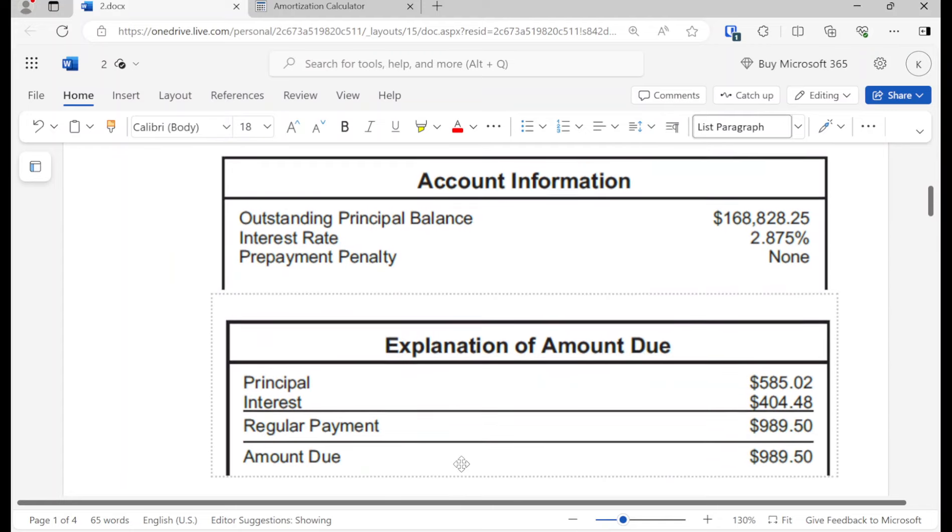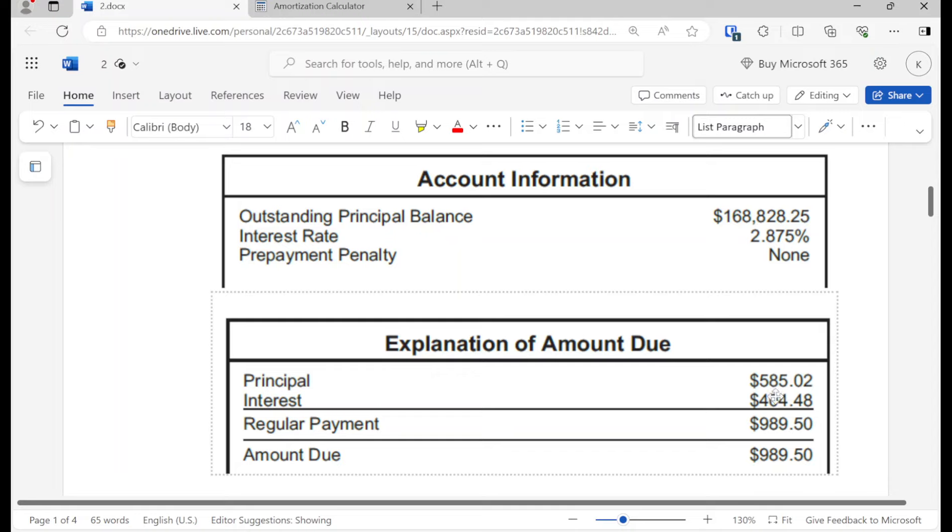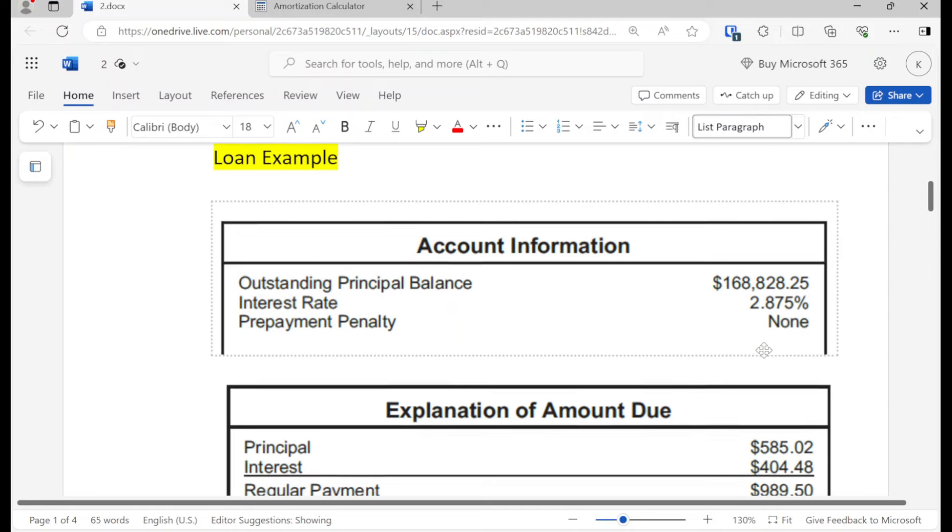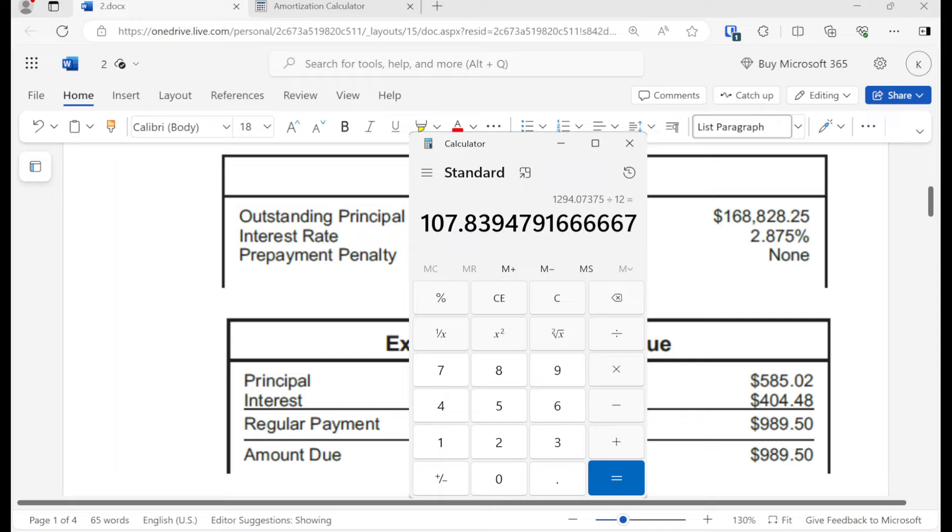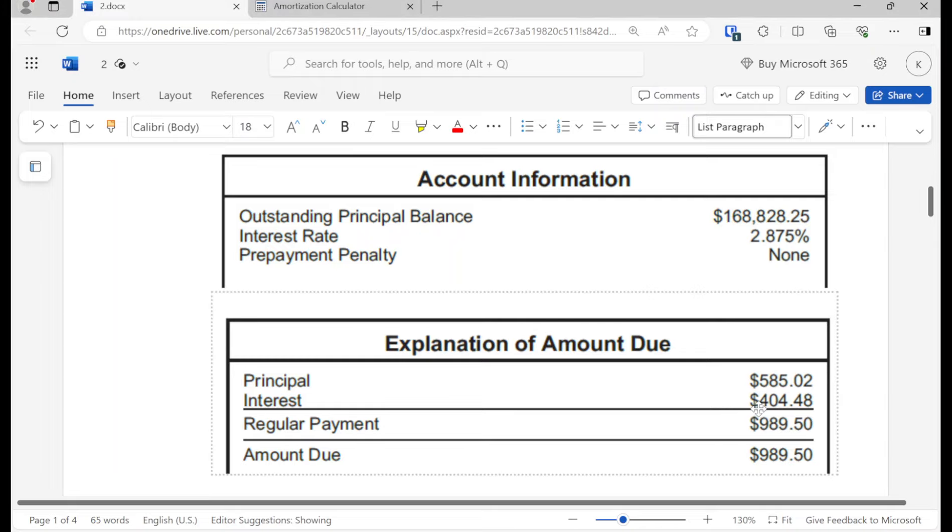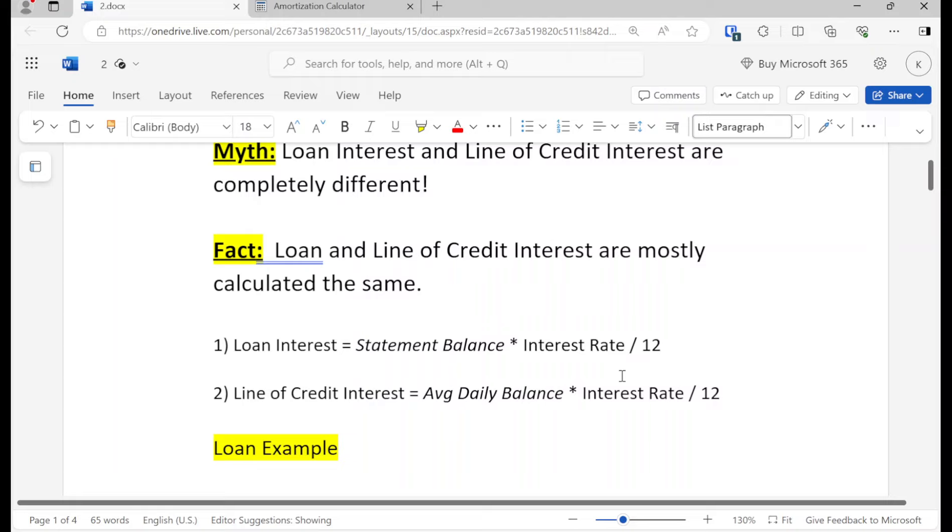So we'll go over an example here. You have the principal balance, the loan balance, the interest rate, and if you want us to calculate what the interest payment would be: this times this divided by 12 and it should be $404.48. So let's go ahead and calculate this. So $168,828.25, that's the loan balance, times the interest rate which is 0.02875, and then we divide it by 12 to get the monthly interest. And as you can see, we have $404.48. And that's what we have down here on the interest payment. The way that they get the principal is you get the regular payment minus the interest and that'll show your principal. So you see how easy that was? Statement balance times the interest rate divided by 12.